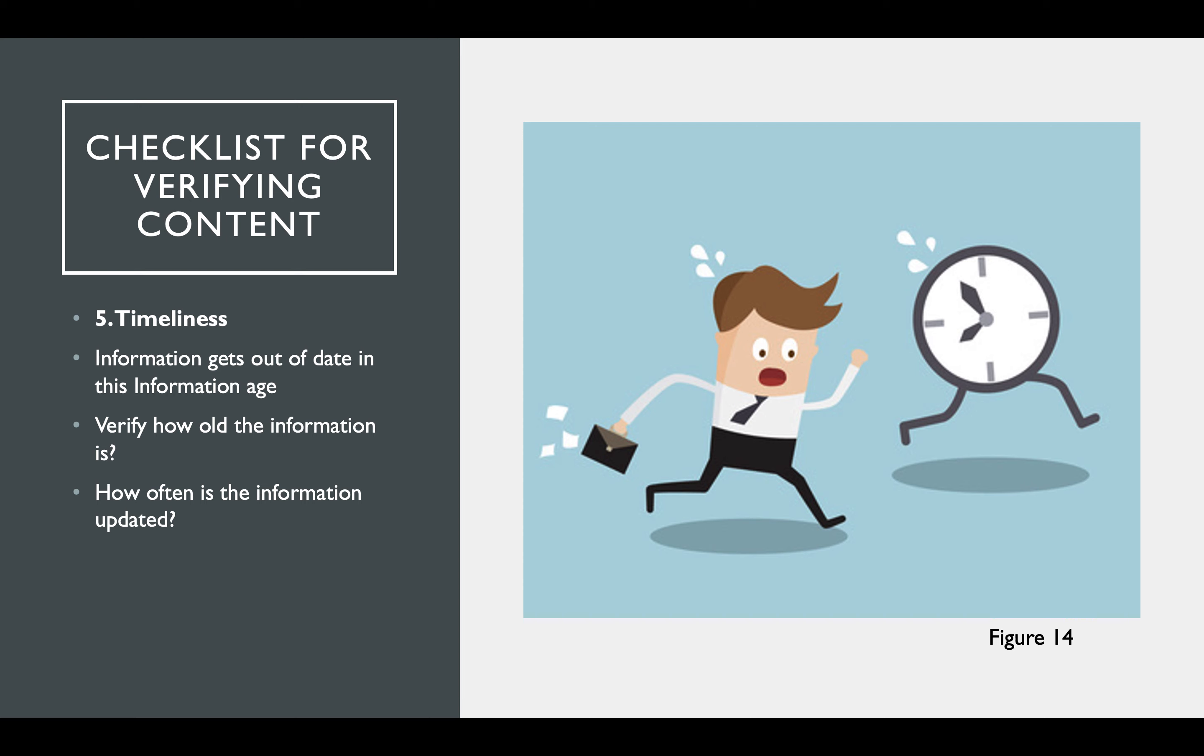Timeliness. Information gets out of date. If you're looking at an article about the latest social media trends and it's from 1996, this means the article might be quite outdated. Make sure you're looking at when the information was last updated. They could have created the article in 2015, but it's been updated as it goes along since 2019, for example. Check the date.